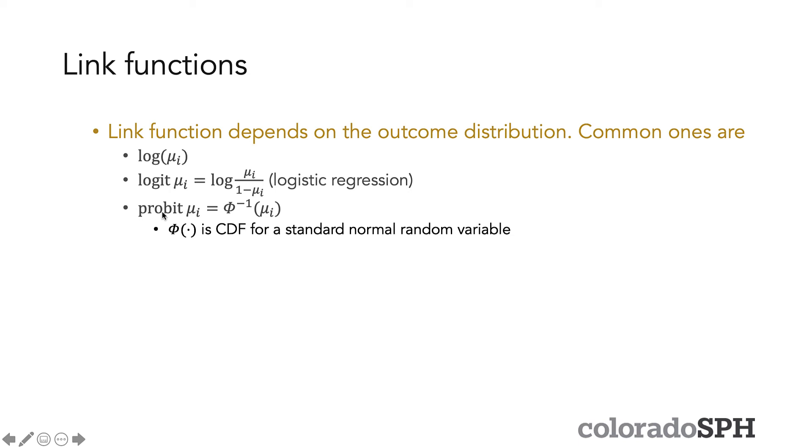And then another common one is something called the probit function. And this is also for binary data, but it's a slightly different function. And in this case this capital phi inverse is the CDF for standard normal random variable. And we'll see that towards the end of our logistic regression lectures in a few weeks.